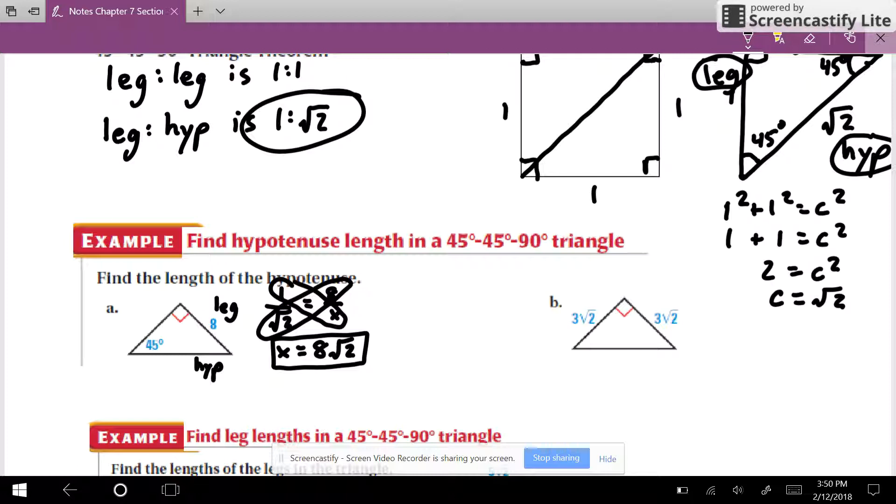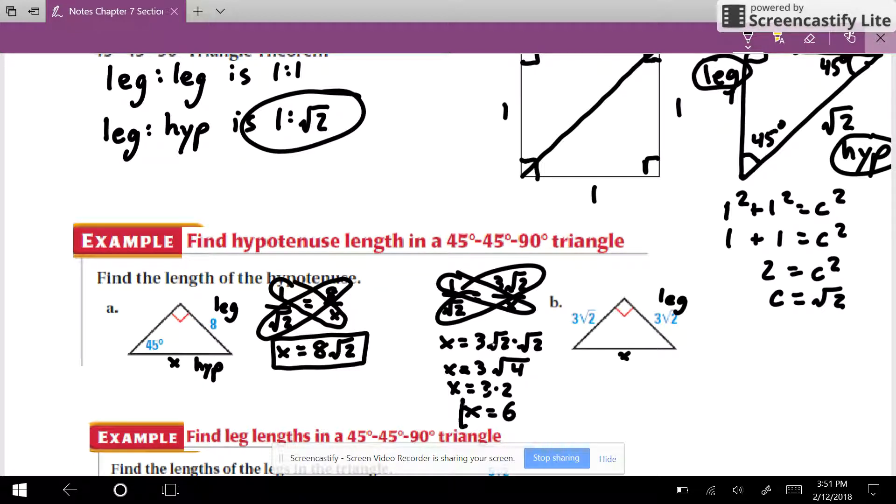Let's do the same thing over here on b. So once again, I'm going to look at leg-to-hypotenuse. Leg-to-hypotenuse is 1 to square root of 2. My leg is 3 square roots of 2, my hypotenuse I'll call it x. Now I do my cross products. 1 times x is x equals 3 square root of 2 times square root of 2. Well, square root of 2 times square root of 2 would be square root of 4, and the square root of 4 simplifies to 2. And I already had a 3 out front, so I really end up with 3 times 2, which is 6. So the answer to this problem is 6.